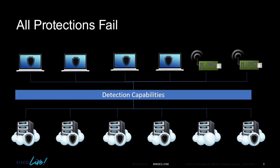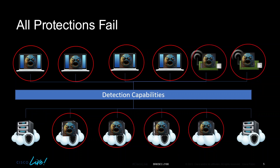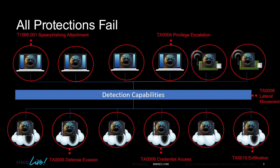Even with all these controls in place, the adversary finds their way in, bypasses the controls, and starts moving laterally within the environment. Hopefully you have some detection capabilities to see this, but the bottom line is bad things are going to happen. When they do, the adversary will use tactics and techniques including spear phishing attachments, defense evasion, privilege escalation, credential access, exfiltration, and lateral movement. Do your controls stand up against these? That's what breach attack simulation helps us understand.